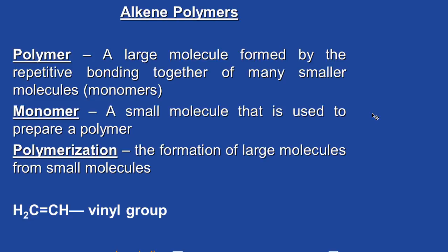Polymers are very large molecules and they're formed by the repetitive bonding together of many smaller molecules called monomers — a small molecule that is used to prepare a polymer. Here we're going to talk about polymers that are formed from alkene molecules. Later when we get into biochemistry, we're going to be talking about biopolymers like DNA and some different proteins.